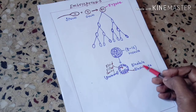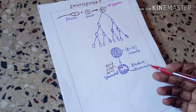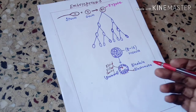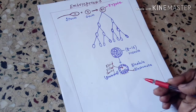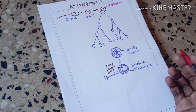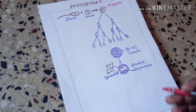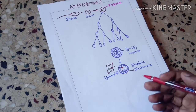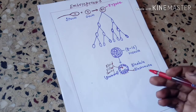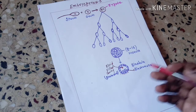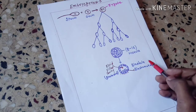After implantation, a female gets pregnant. The uterus has three walls: the outermost is called perimetrium, the middle is myometrium, and the inner wall is endometrium. The blastula attaches to the endometrium wall of the uterus.